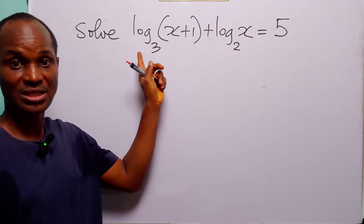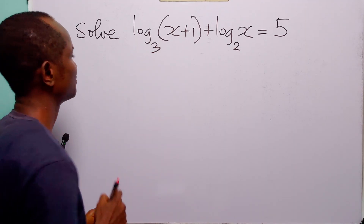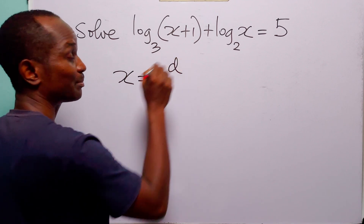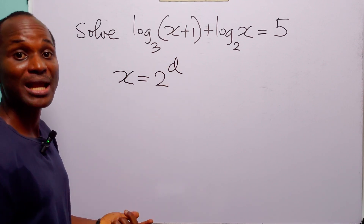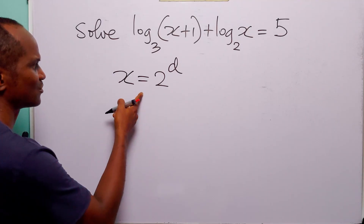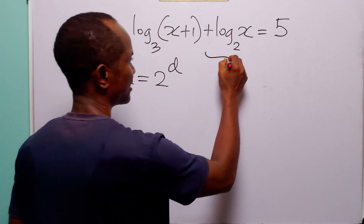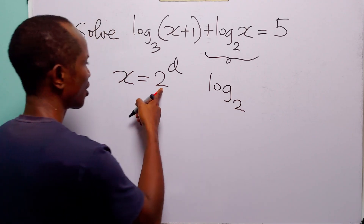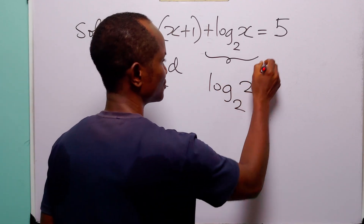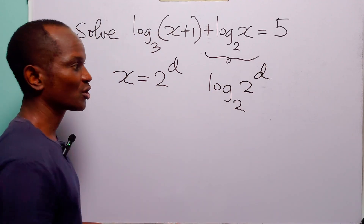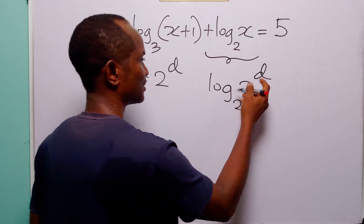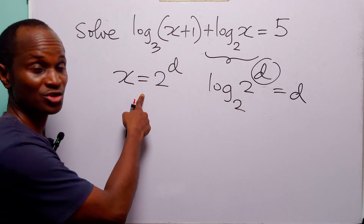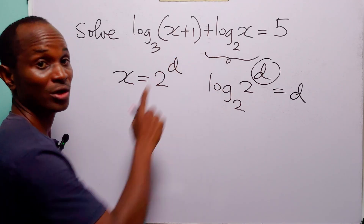One way to solve this equation is to assume that x is equal to 2 to the power d. You may ask why. Notice that with this substitution, this term is now going to be log to base 2 of 2 to the power d. And of course, log to base 2 of 2 to the power d is equal to d. So with this substitution, you have eliminated the log in this term.